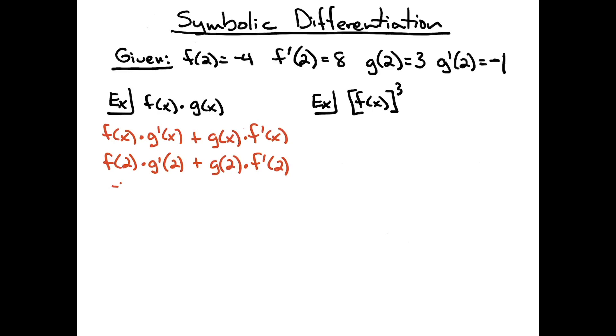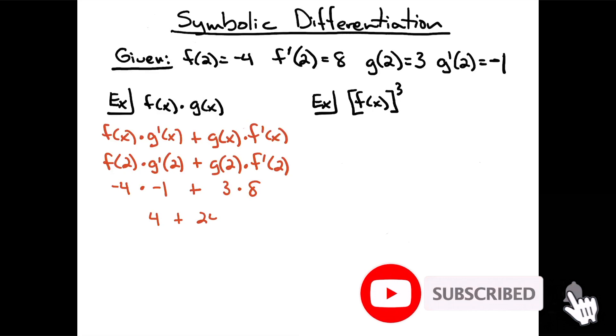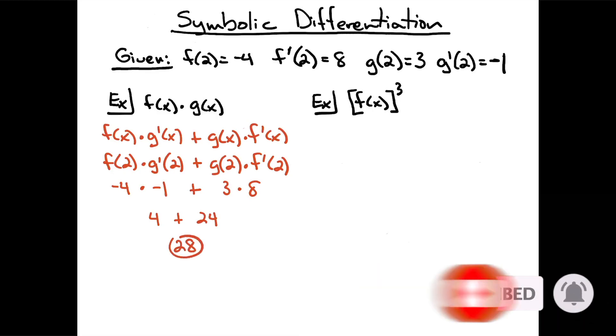So f of 2 is negative 4 times g prime of 2, which is negative 1, plus g of 2 is 3, times f prime of 2 is 8. So then we're going to have 4 plus 24, and then a total of 28 here for my final value.